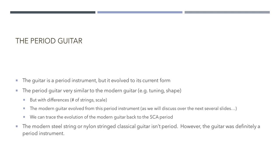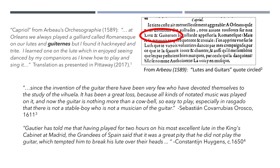The guitar did not look like a current modern guitar, but it did evolve to its current form. The period guitar is similar to the modern guitar both in tuning and in shape, but has significant differences such as the number of strings and the physical size of the instrument. I want to be very clear that the modern steel string and nylon string classical guitar are not period guitars. However, the guitar itself is a period instrument.